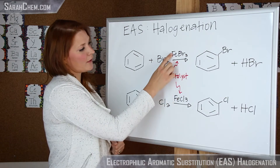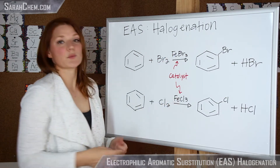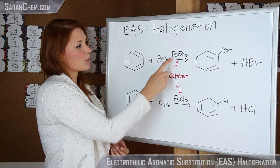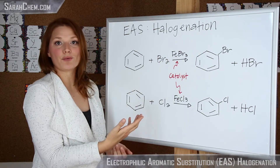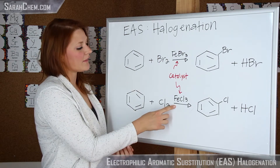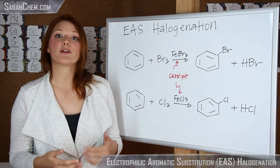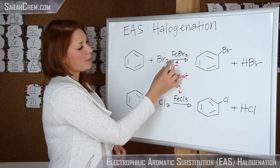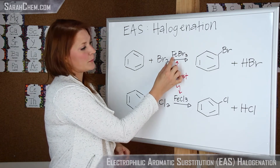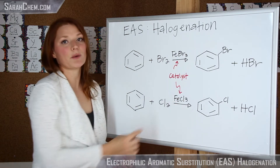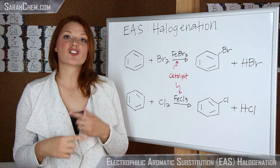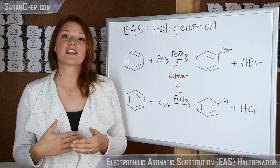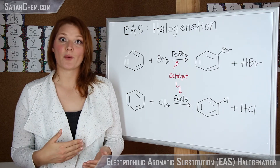You'll notice that above the arrow, in both cases, we're going to see a catalyst. In the case of the bromination, we're going to use iron(III) bromide, and in the case of the chlorination, we're going to use iron(III) chloride. There's going to be a reaction that occurs between these two components that generates the actual electrophile that we're going to use to get this reaction going.